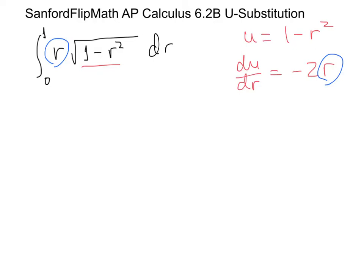I'm going to use du/dr and make a replacement for u and a replacement for dr. I'll solve for dr by multiplying by dr and dividing by −2r, so dr = du / (−2r). Then I'm just going to rewrite the original expression making those replacements.